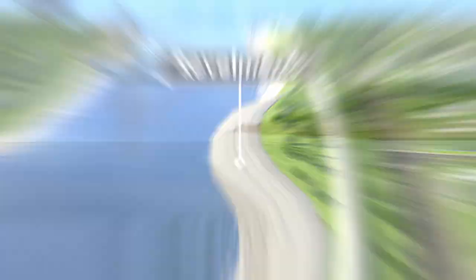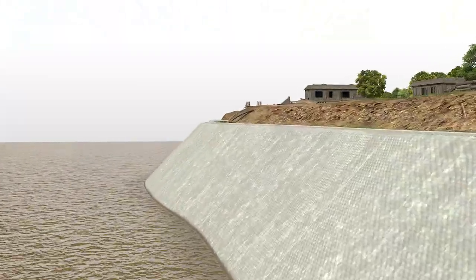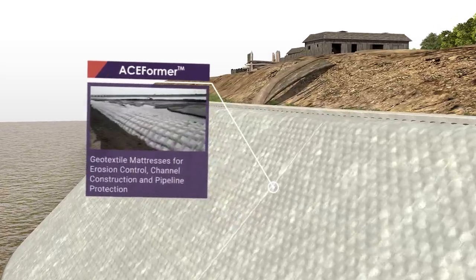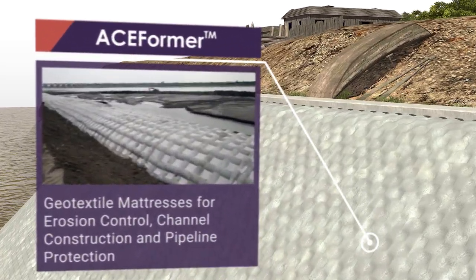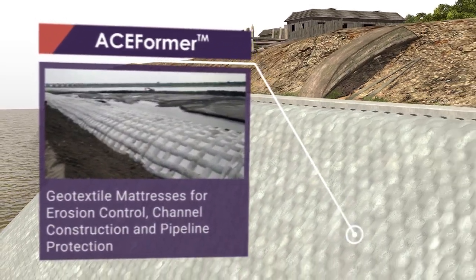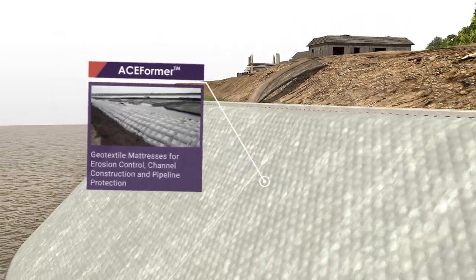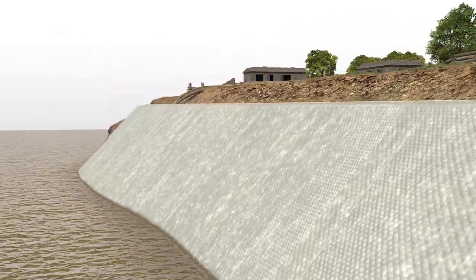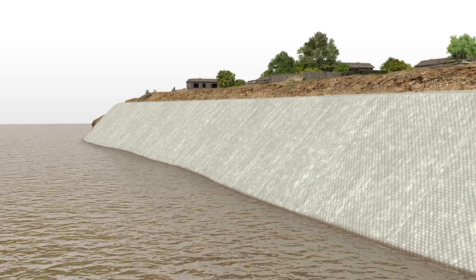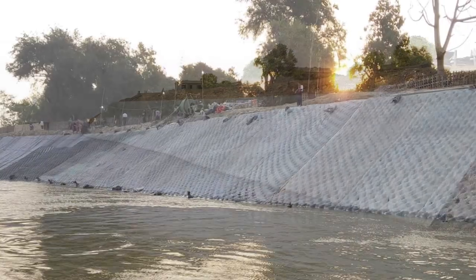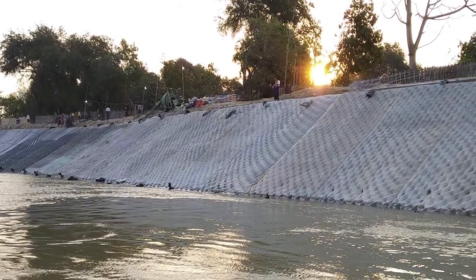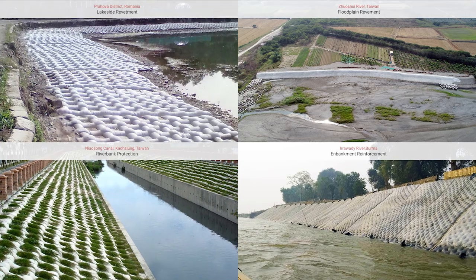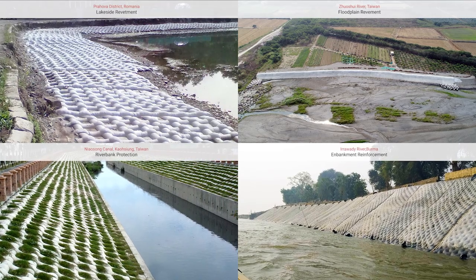Revetments: ACE Formr, a two-layer, high-strength geotextile mattress grouted with cement mortar, provides an effective shield against erosion. It is capable of reducing the wave energy and flow velocity onto the applied riverbank. In addition, it accommodates different landforms without issues whether it is installed on the waterfront or underwater.